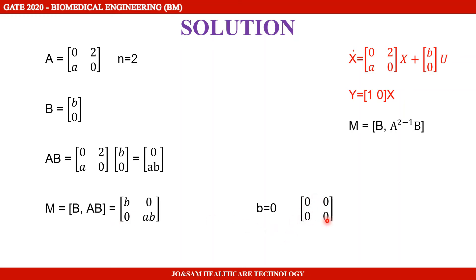If B equals 0, then A·B is also 0. The entire matrix becomes a zero matrix, whose rank is 0, which is not equal to the order of the matrix, which is 2. Therefore, B should not be equal to 0 for the system to be controllable.